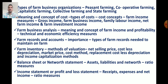Next is Types of Farm Business Organization, meaning Systems of Farming. In that, we have to see Peasant Farming, Cooperative Farming, Capitalistic Farming, Collective Farming, and State Farming. There is a difference between types and systems of farming, and we will study both in detail.